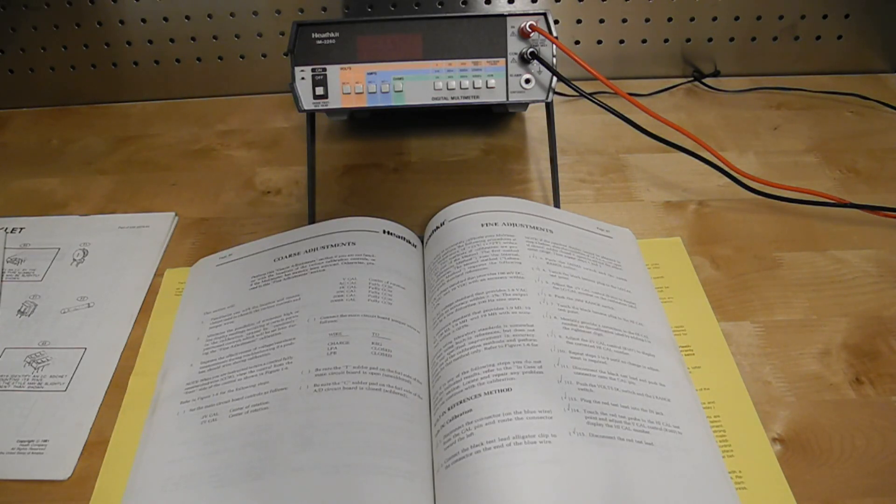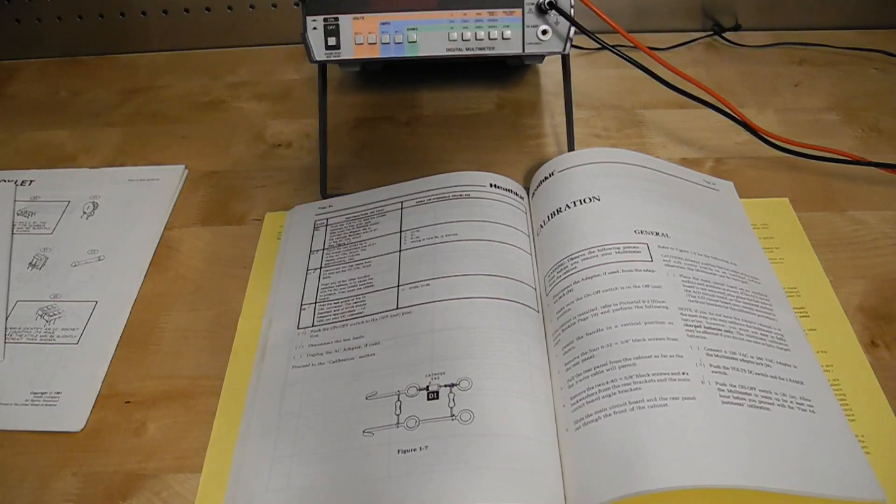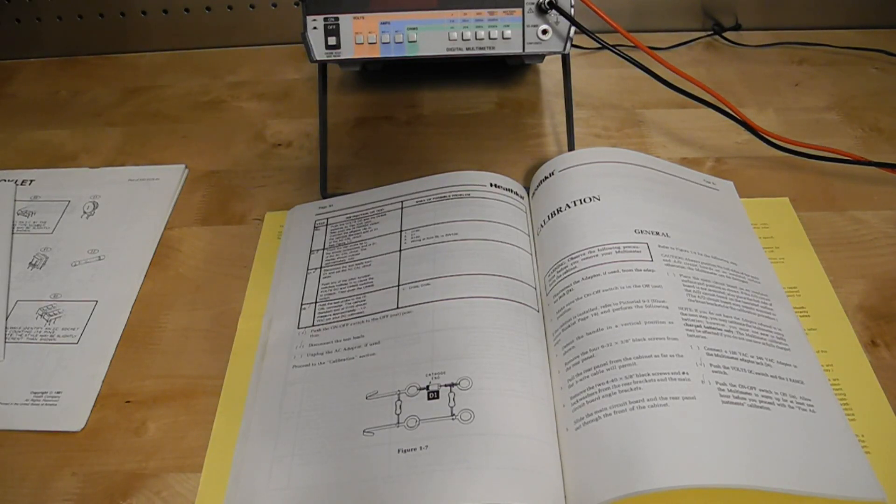Calibration initially sets the trimmers for a course adjustment centered or at one end of rotation. You can calibrate using references built into the instrument. A label provided with each unit listed values unique to the calibration resistors in the unit to use when adjusting to the built-in references. This allowed the built-in calibration to be quite accurate without the use of high precision resistors or other components. AC calibration used a small external test circuit containing two resistors and diode.